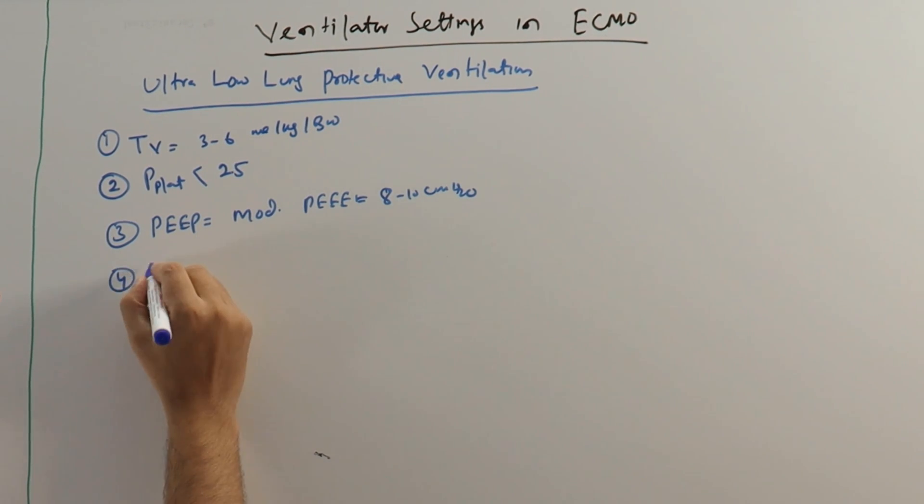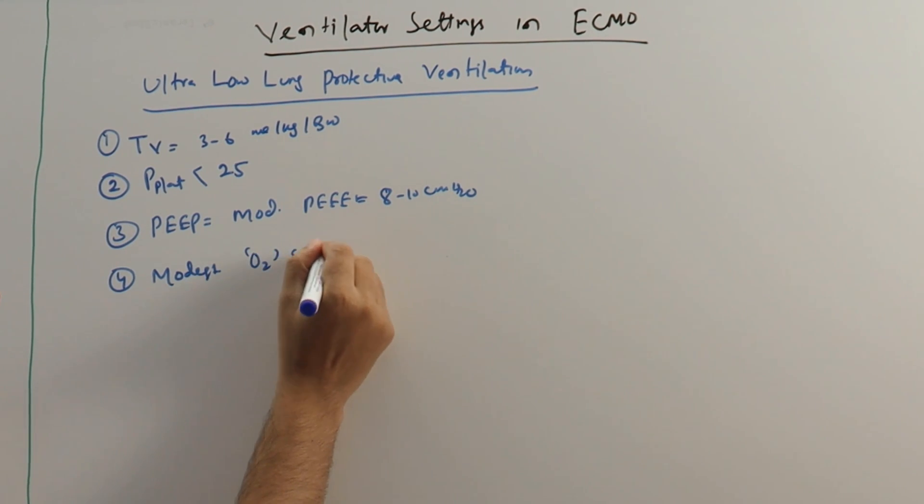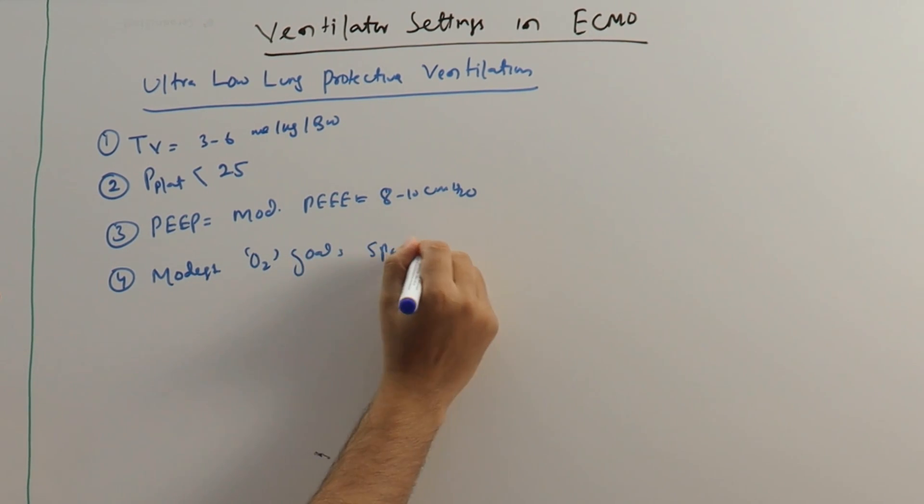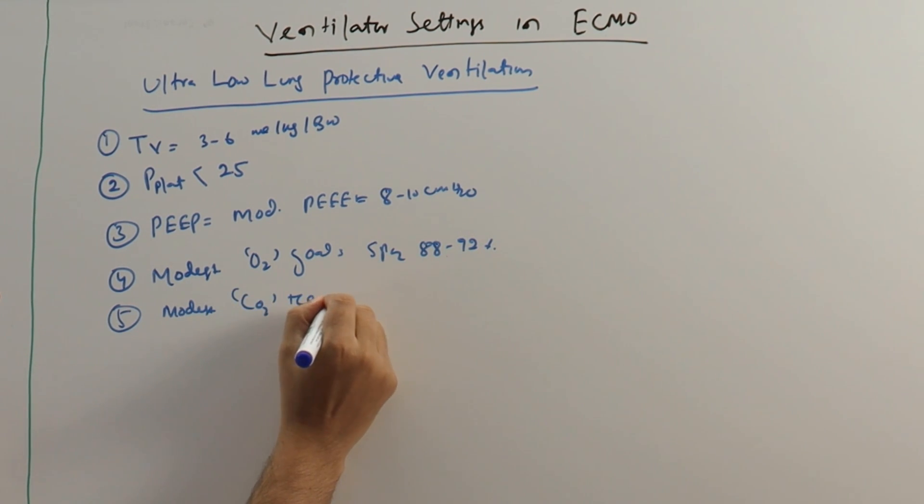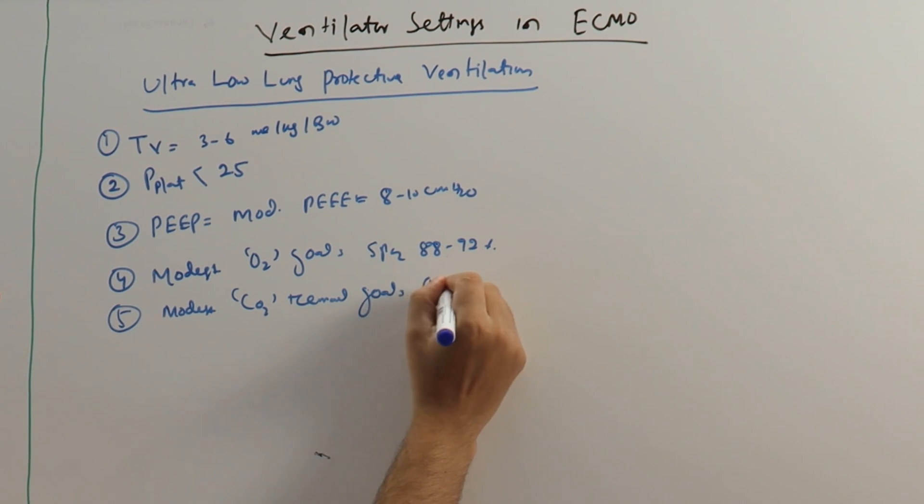Fourth, we have to have a modest oxygenation goal or SpO2 goal, SpO2 target 88 to 92 percent. Number five, modest CO2 removal goal, so you can tolerate a little bit of acidosis, for example around pH 7.25 to 7.35.